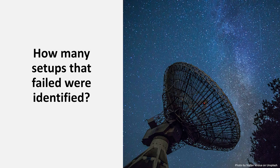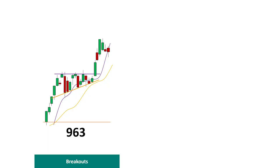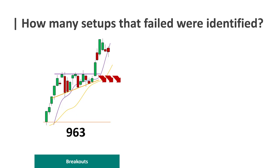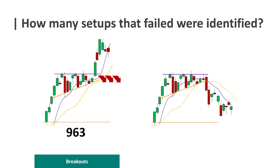Here's the first question: How many setups that failed were identified? In the initial deep dive, I was looking for breakouts and a total of 963 stocks were identified. However, while doing the deep dive, I could see situations when a setup did happen — there was a first leg and then a consolidation sideways, but there was no breakout. I was curious to see how many situations like these are out there and why this is happening.